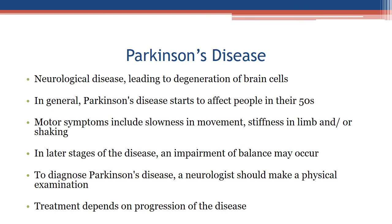Parkinson's disease — a neurological disease leading to degeneration of brain cells: it generally starts to affect people in their 50s. Motor symptoms include slowness of movement, stiffness in limbs, and shaking. In later stages, impairment of balance may occur. Diagnosis requires a physical examination by a neurologist, and treatment depends on the progression of the disease.